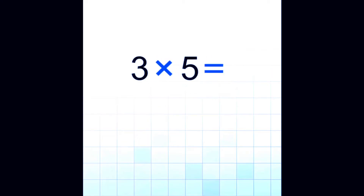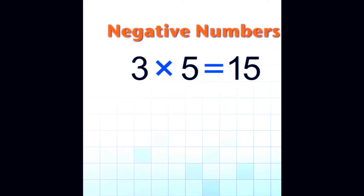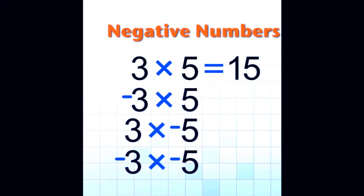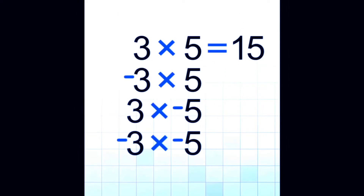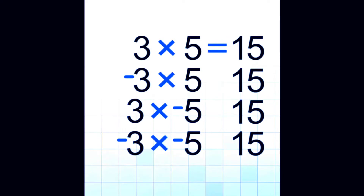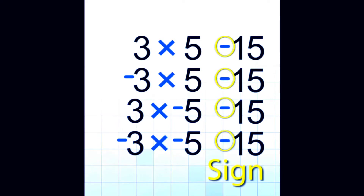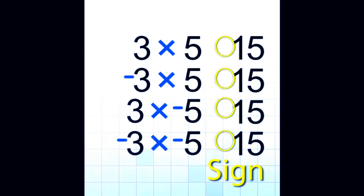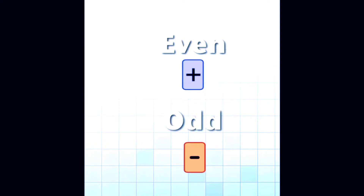To understand further, for example, 3 times 5 — we all know the product of 3 and 5 is 15. The key is knowing whether to get a positive or negative result. So in this case, negative 3 times positive 5, positive 3 times negative 5, and negative 3 times negative 5 can be either positive or negative. To get the answer, we need to look for the pair of negative factors. If the number of negative factors is even, the product is positive.